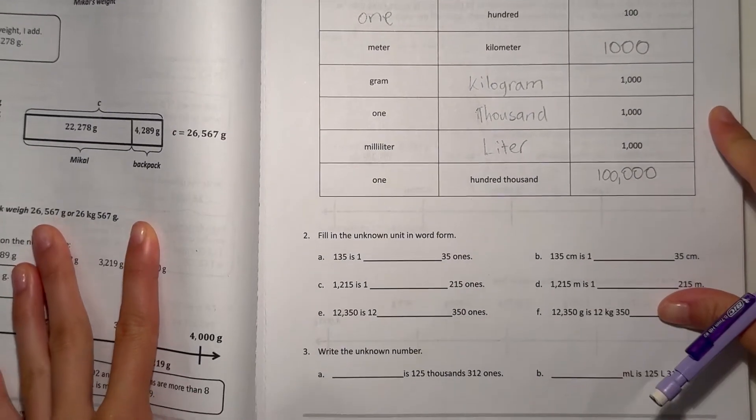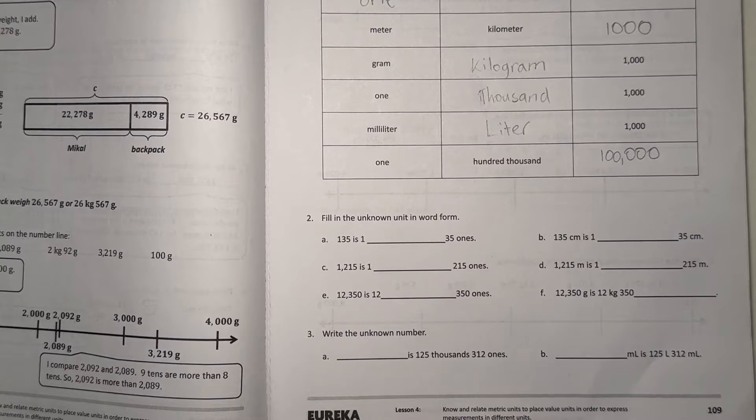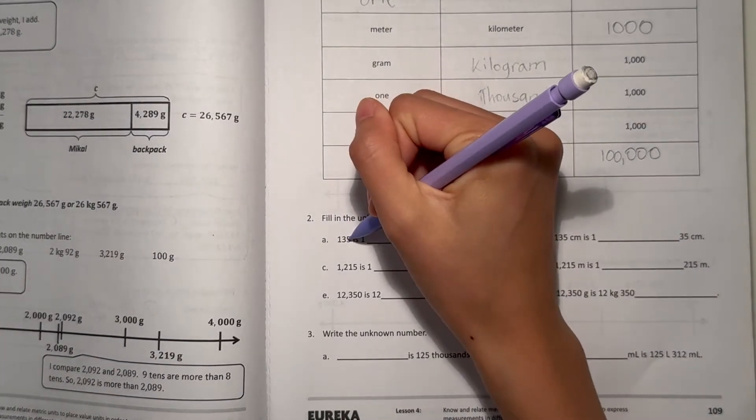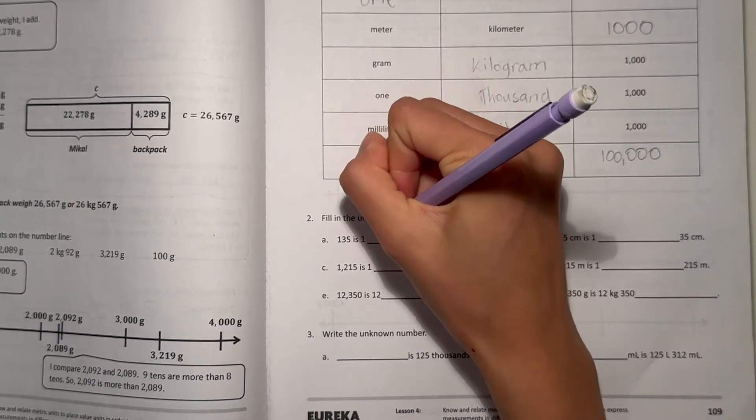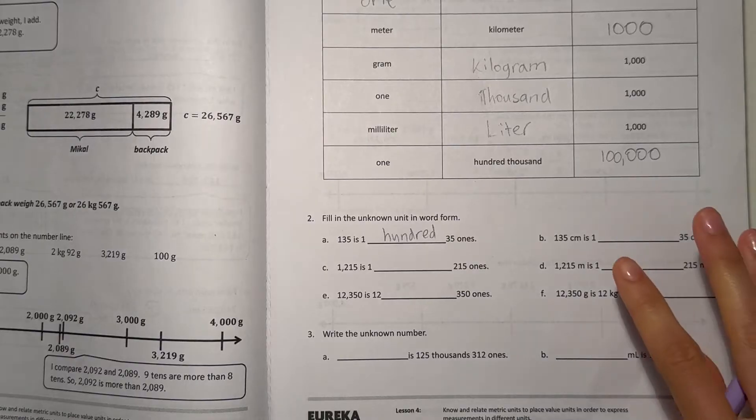Alright, and number 2, fill in the unknown unit in word form. 135 is 1 blank and 35 ones. So it's 135 ones.